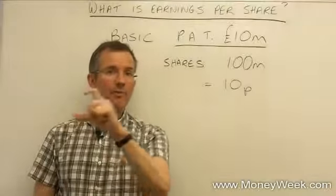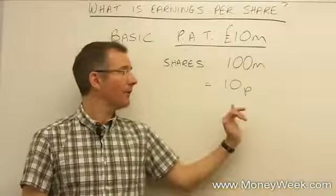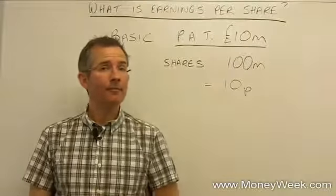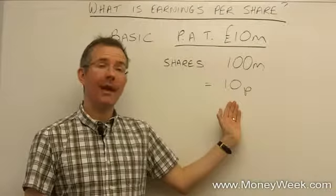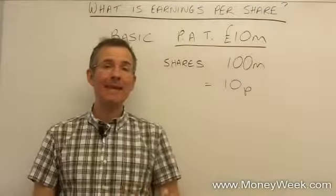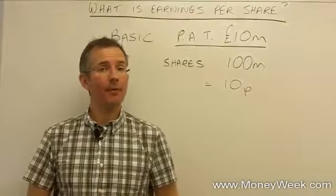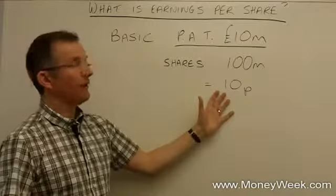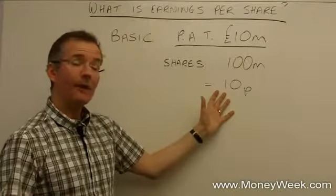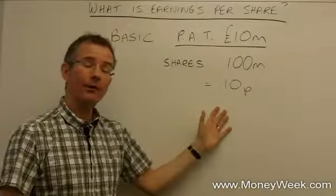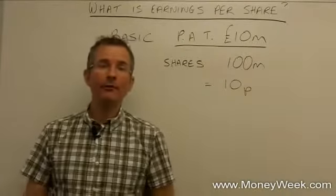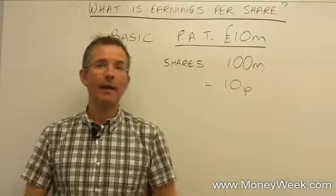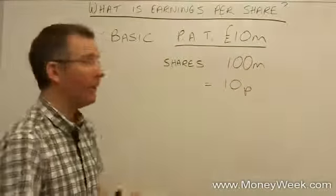For example, if the current share price is a pound and EPS based on the latest earnings is 10p, then the P/E multiple would be 10. That's covered in another video. Now, that's what they call basic earnings per share. The calculation looks fairly straightforward, but just be aware that companies publish at least one other version — normally because they're required to in the UK — and that's called the diluted earnings per share figure.